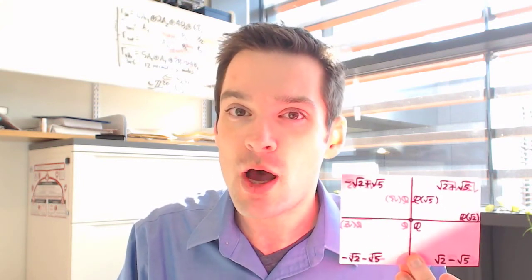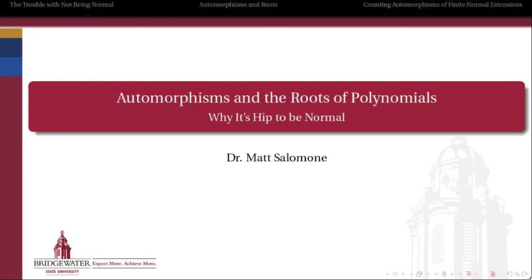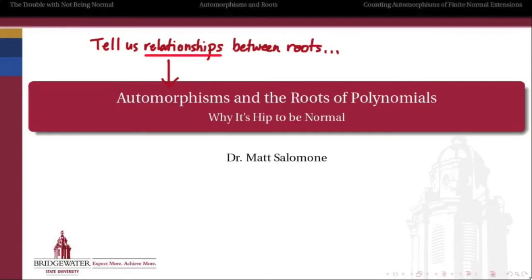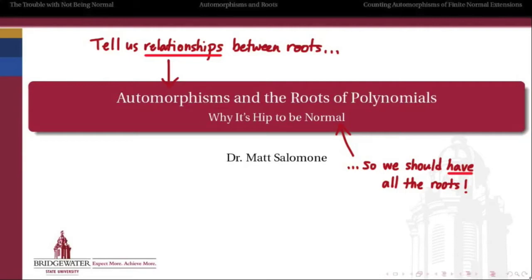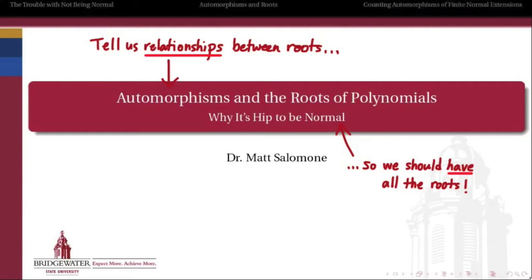Secondly, we want to look at the close connection between automorphisms and normal extensions. If I have a normal extension of a field, it turns out I'll know exactly how many distinct automorphisms of that field extension there are. Automorphisms tell us about the relationships between the roots of a polynomial equation, but in order to understand all of the roots, we need to have access to all of those roots — we would like a normal extension, one in which we must have all roots of a polynomial as long as we have at least one. Extensions that are not normal are more difficult to work with, because we need all of the roots of that polynomial in our field.